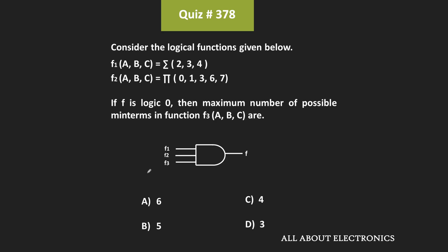Hey friends, welcome to the YouTube channel all about electronics. In this question, we have been given three logical functions and we have been given that when the AND operation is performed on these three functions, then its output is equal to logic zero. We have been asked to find the maximum number of possible minterms in the function f3.